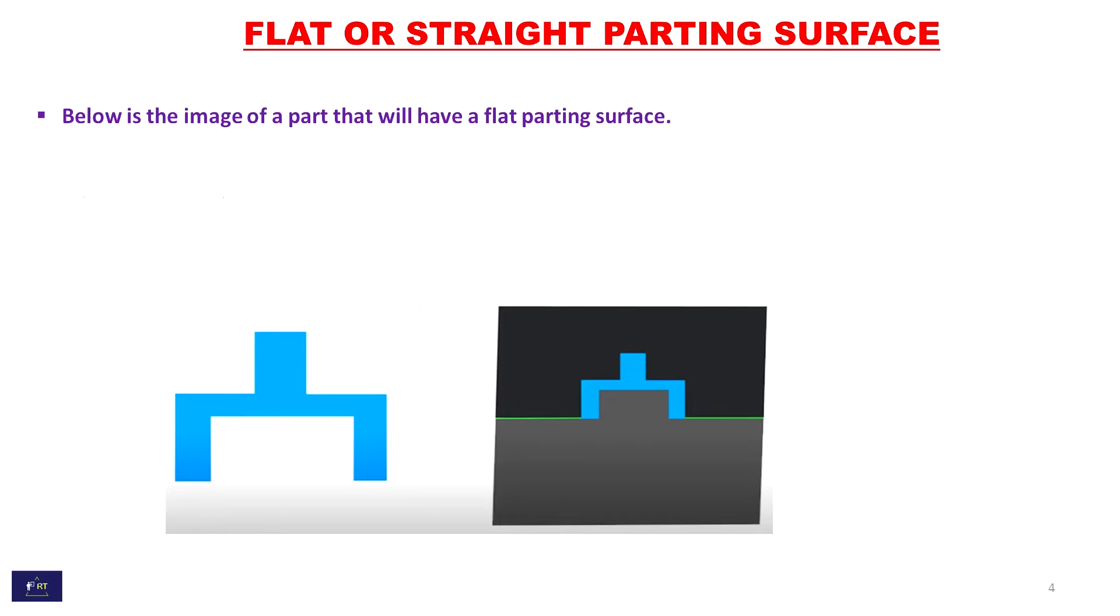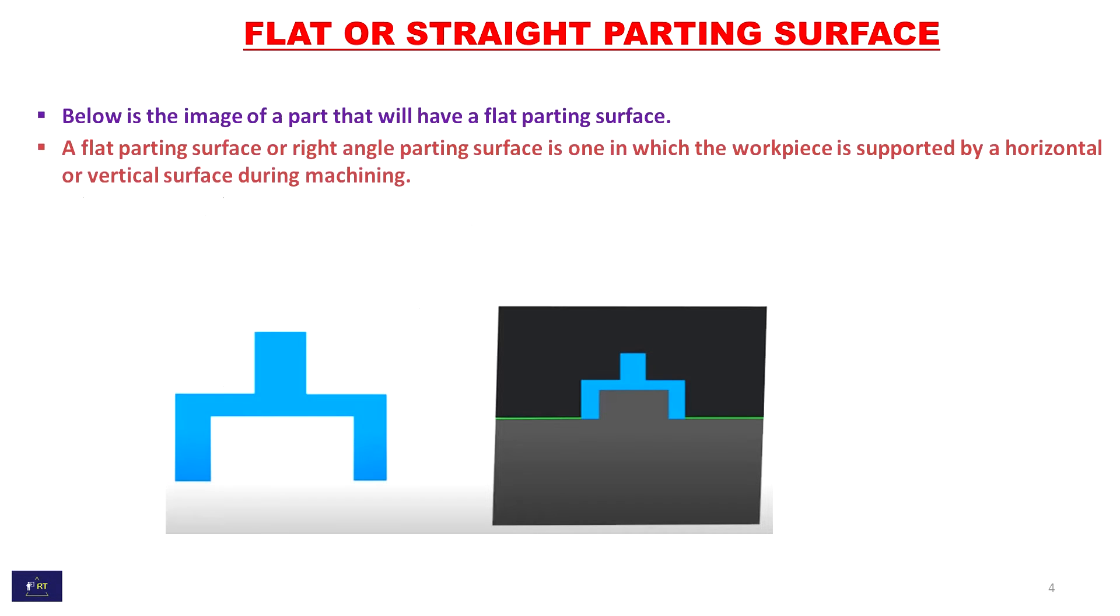Flat or straight parting surface. Below is the image of a part that will have a flat parting surface. A flat parting surface or right angle parting surface is one in which the workpiece is supported by a horizontal or vertical surface during machining.